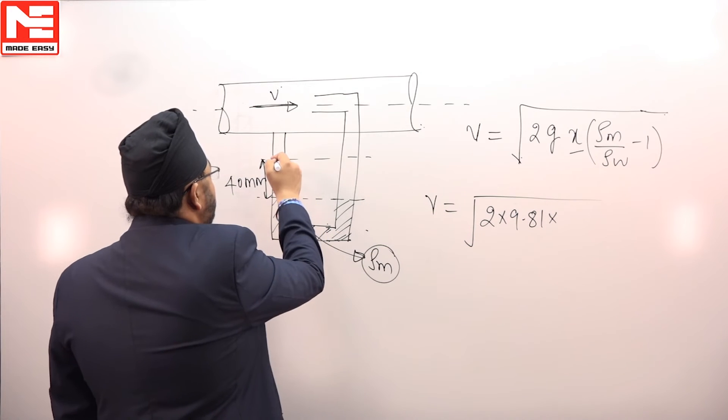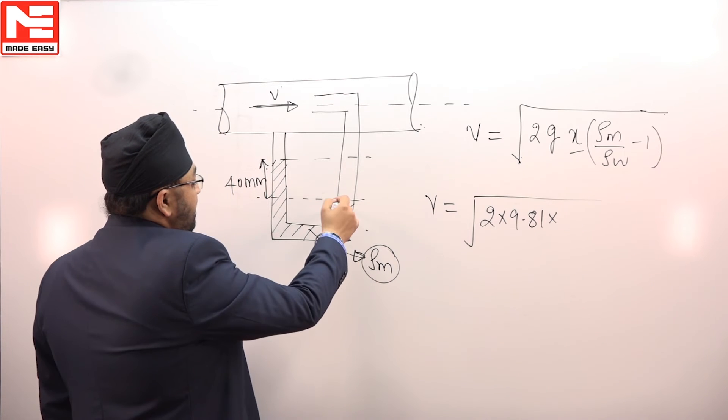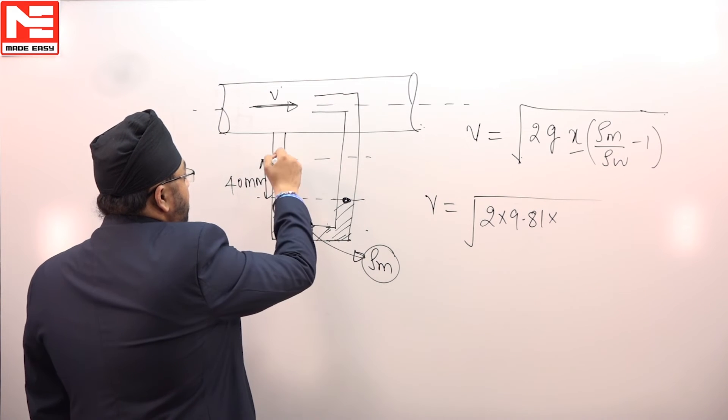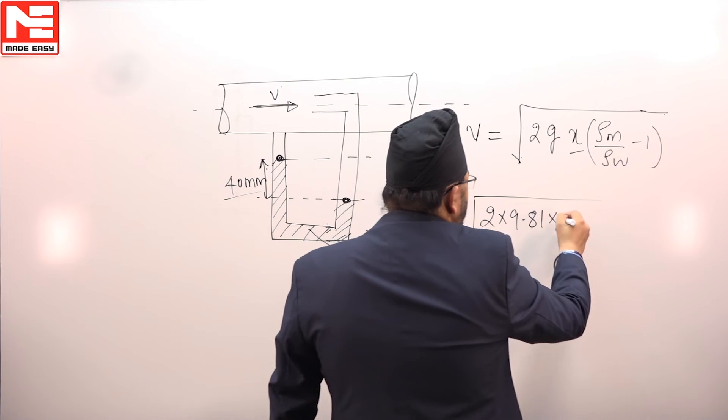So what is the difference in the level of manometric fluid which is 40 mm, so it is going to be 0.04.